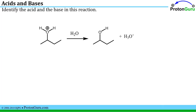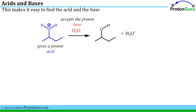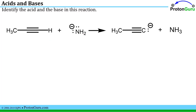Our first problem simply asks us to identify the acid and base in this particular reaction. A proton exchange is involved — we see a proton that is no longer on one oxygen; instead it has gone to another oxygen. The acid will be the proton donor and the base will be the proton acceptor, so it is relatively straightforward to identify the acid that gives the proton and the base that accepts the proton.